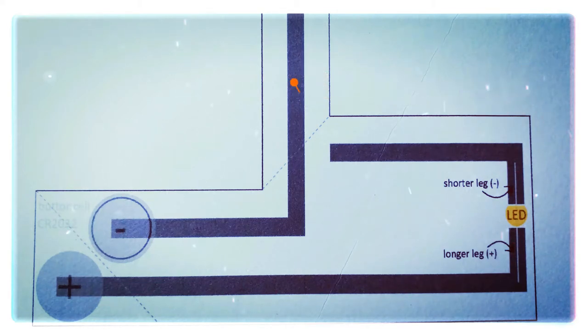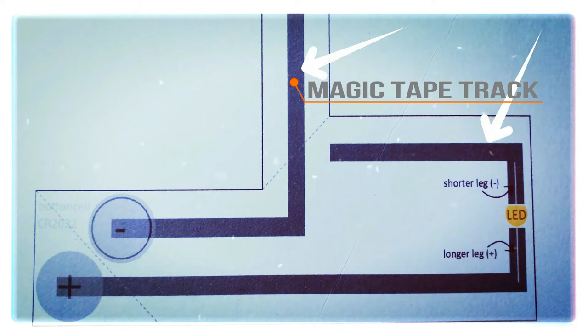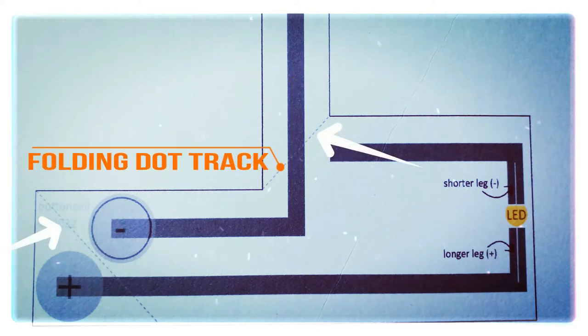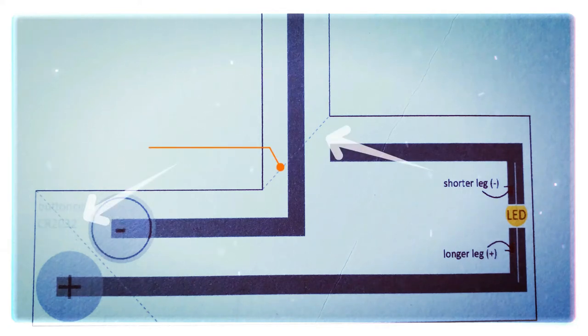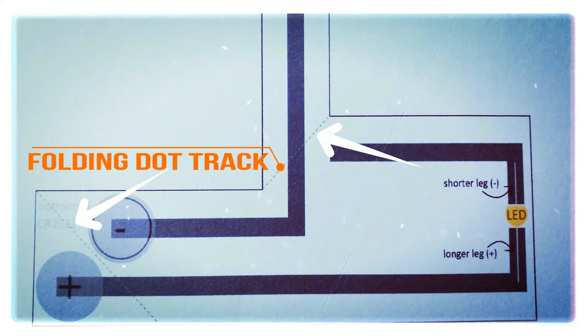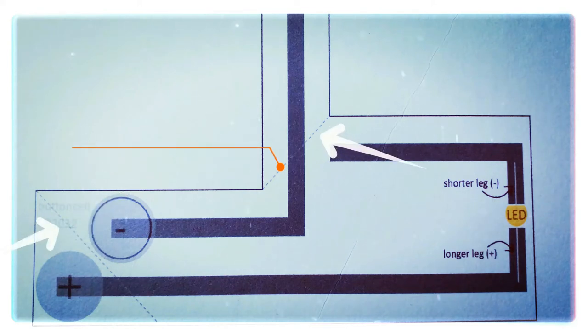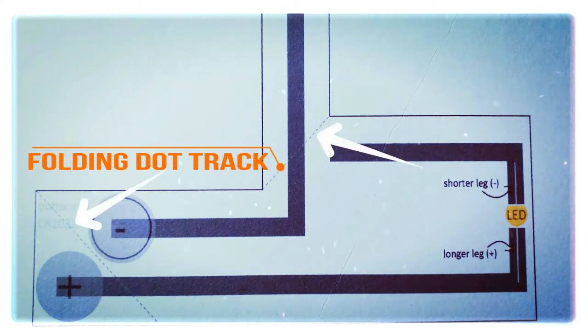We will apply magic tape to all thick tracks of this circuit template. Now the third important structure design is dotted lines that are printed at two places on this circuit template. These dotted lines are called folding dot track. These folding dot tracks will play a very significant role in the working of STEM projects that will be built on this circuit template.